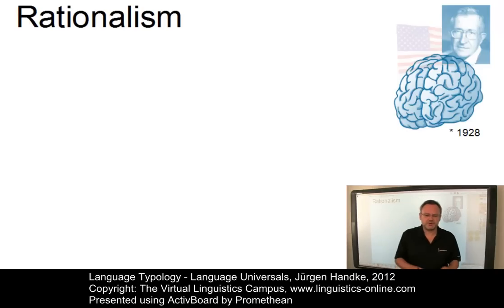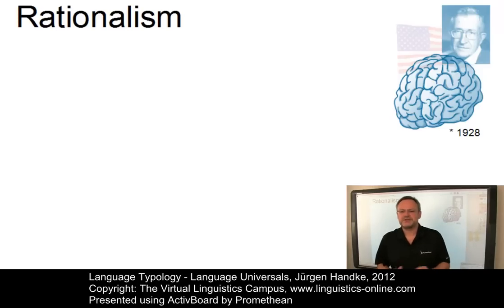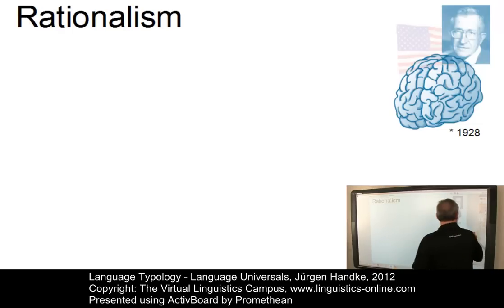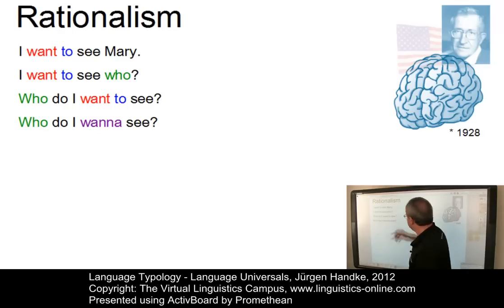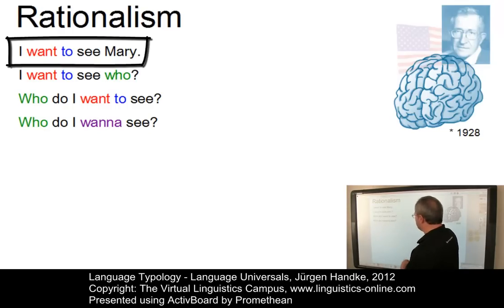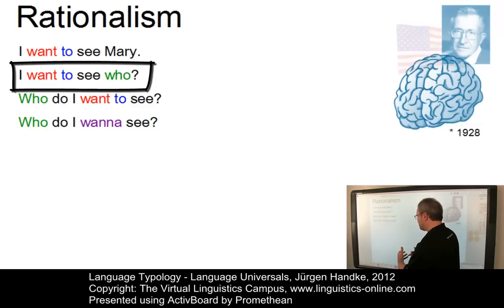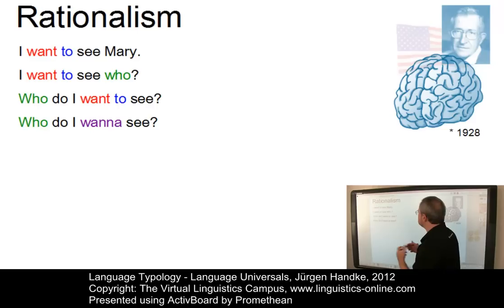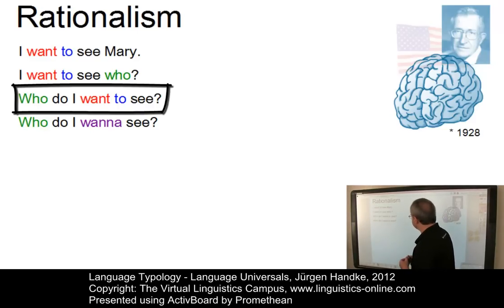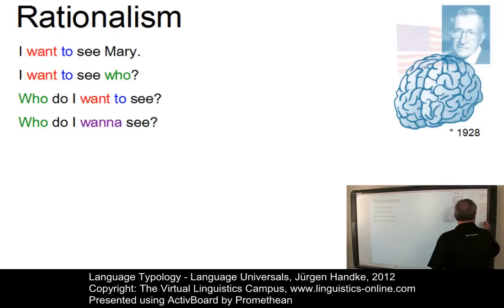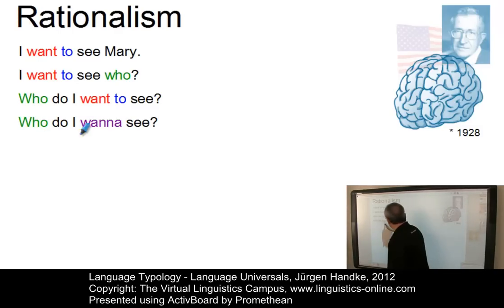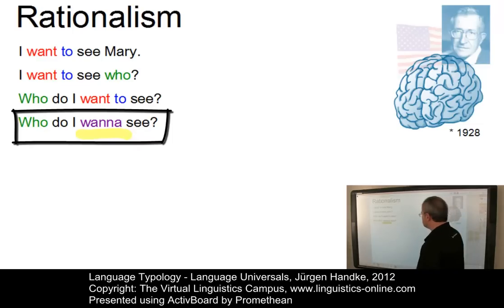The following example postulates a constraint that blocks a contraction operation. In most spoken varieties of English, function words often contract with nearby words — a typical example is the wanna construction. Take the sentence 'I want to see Mary.' If we turn it into an echo question: 'I want to see who.' Fronting the wh-element gives 'who do I want to see?' And we can then contract 'want to' to 'wanna,' giving 'who do I wanna see?'